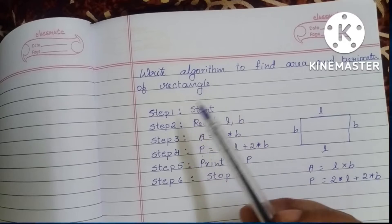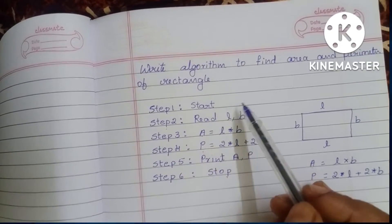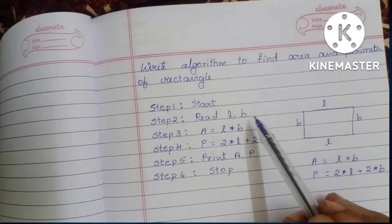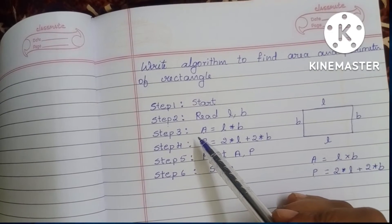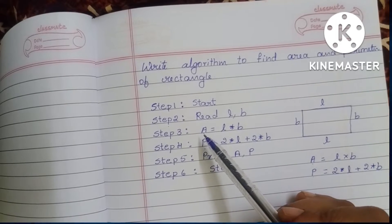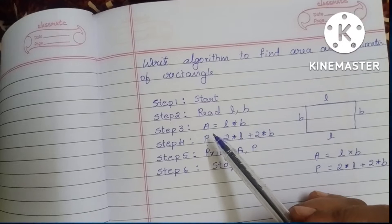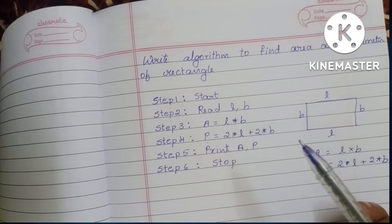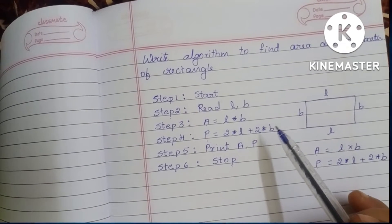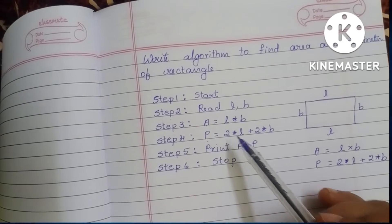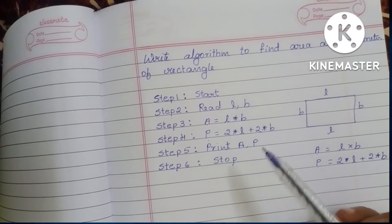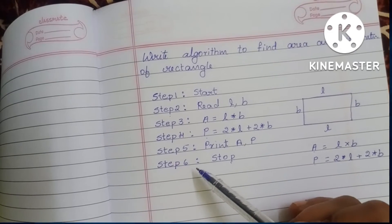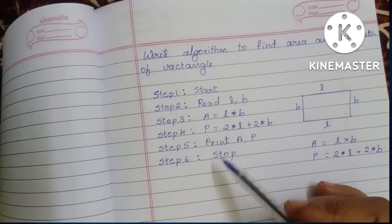To summarize: to find the area and perimeter of a rectangle using an algorithm — Step 1: Start. Step 2: Read L, B (length and breadth). Step 3: Calculate area, A is equal to L times B. Step 4: Calculate perimeter, P is equal to two times L plus two times B. Step 5: Print A, P. Step 6: Stop.